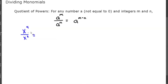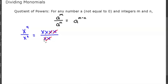Looking at this visually, x to the fourth is x times x times x times x — x four times — all over x squared, which is x times x. We can cancel these terms out: this first x cancels with this x, this x cancels with that x, and we're left with two x's, or x squared, which is x to the 4 minus 2.